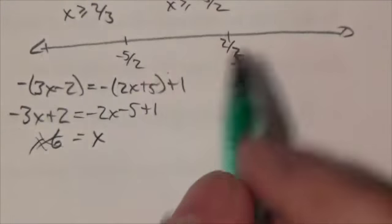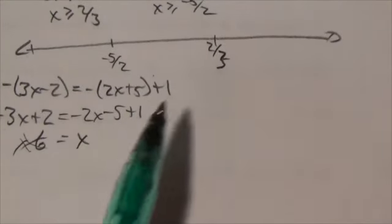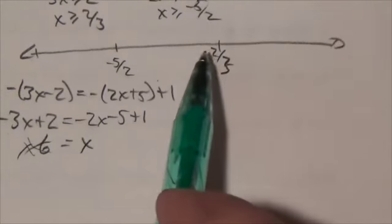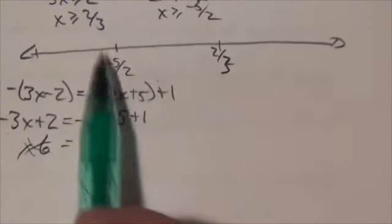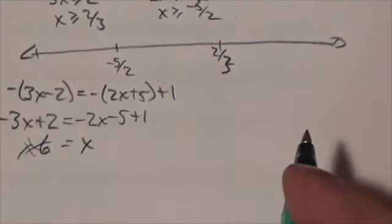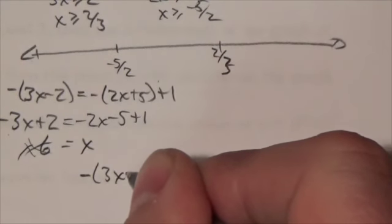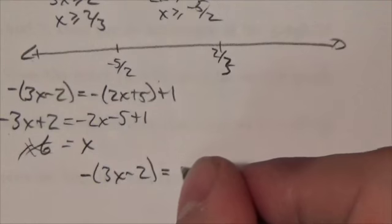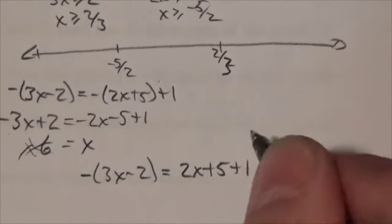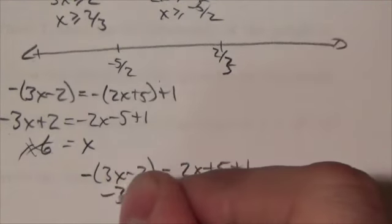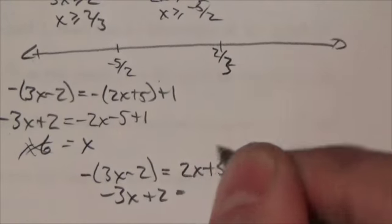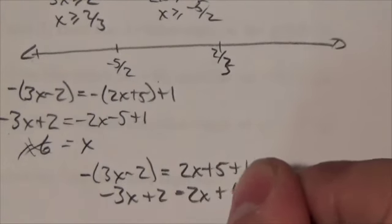Now I move on and I'm going to work in between negative 5 halves and 2 thirds. Now, the 3x minus 2 term, because we're still to the left of 2 thirds, that one's going to change. The 2x plus 5 one won't. So then the equation is going to become negative 3x minus 2 is equal to 2x plus 5. That one won't change. Plus 1.